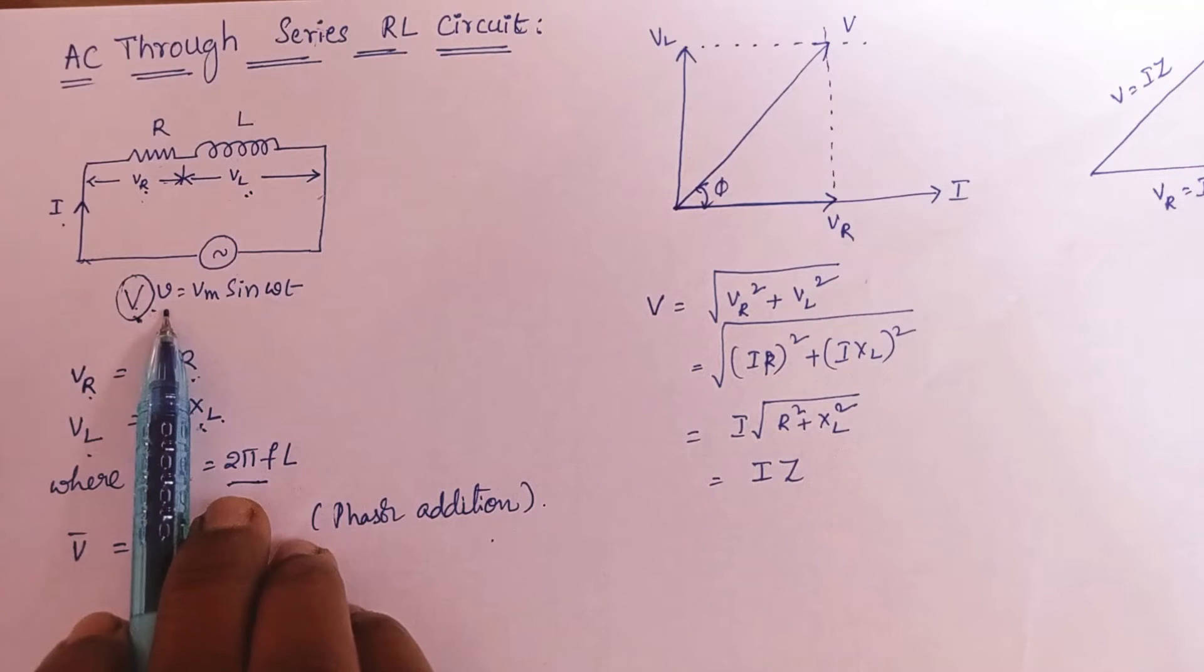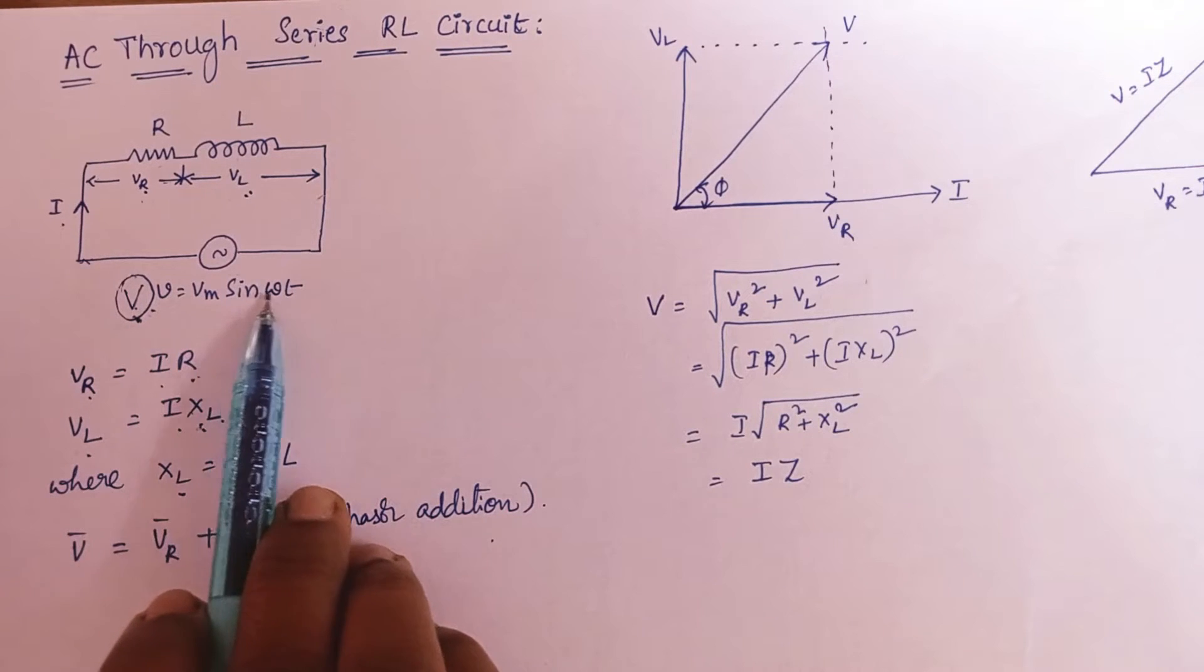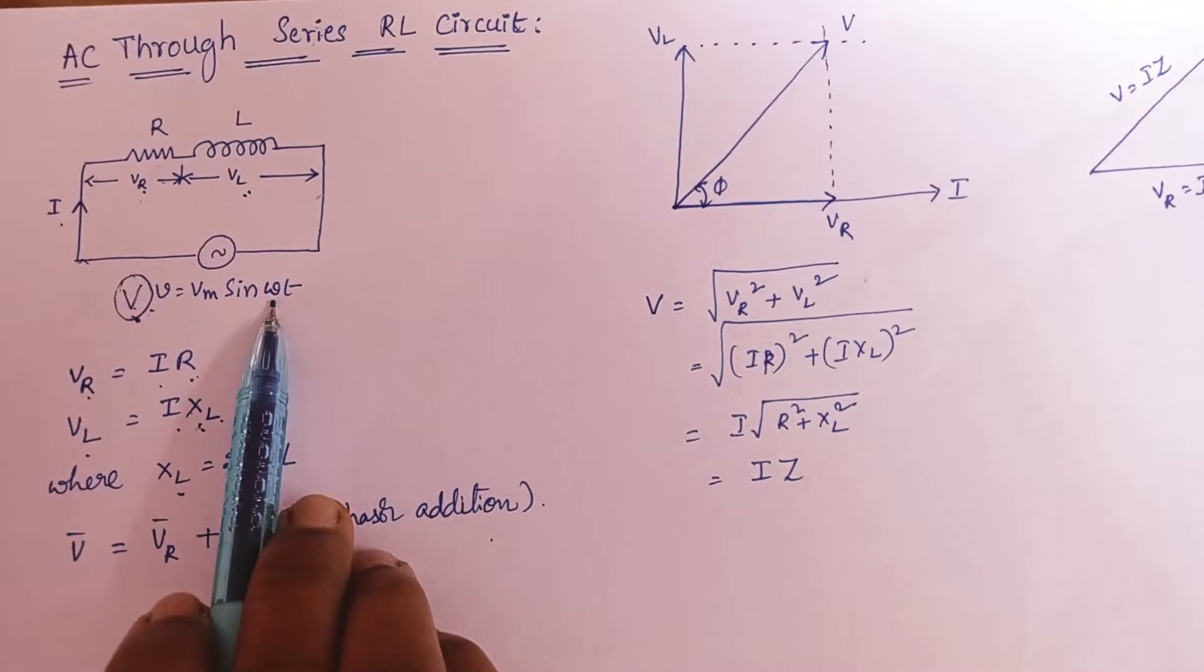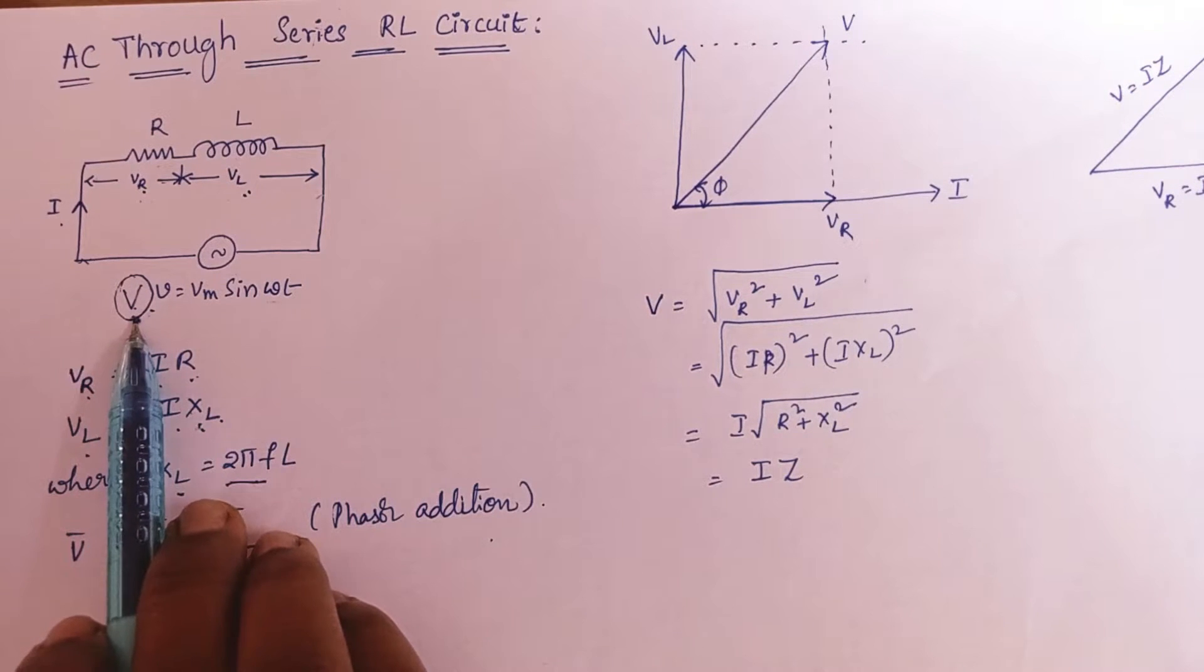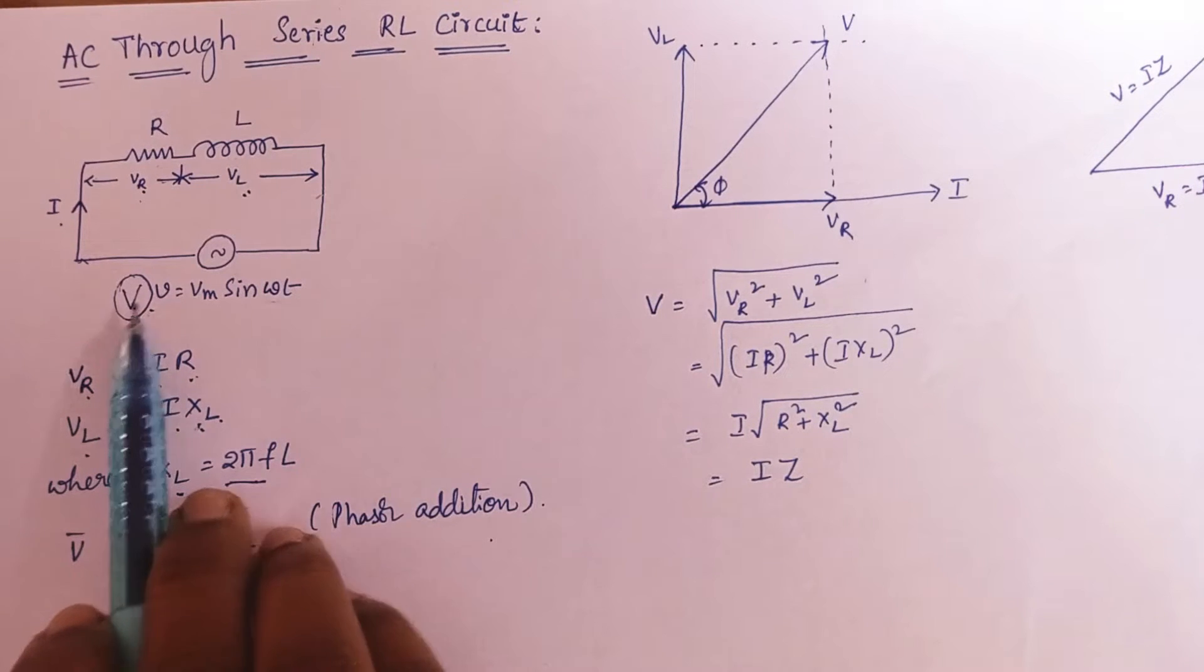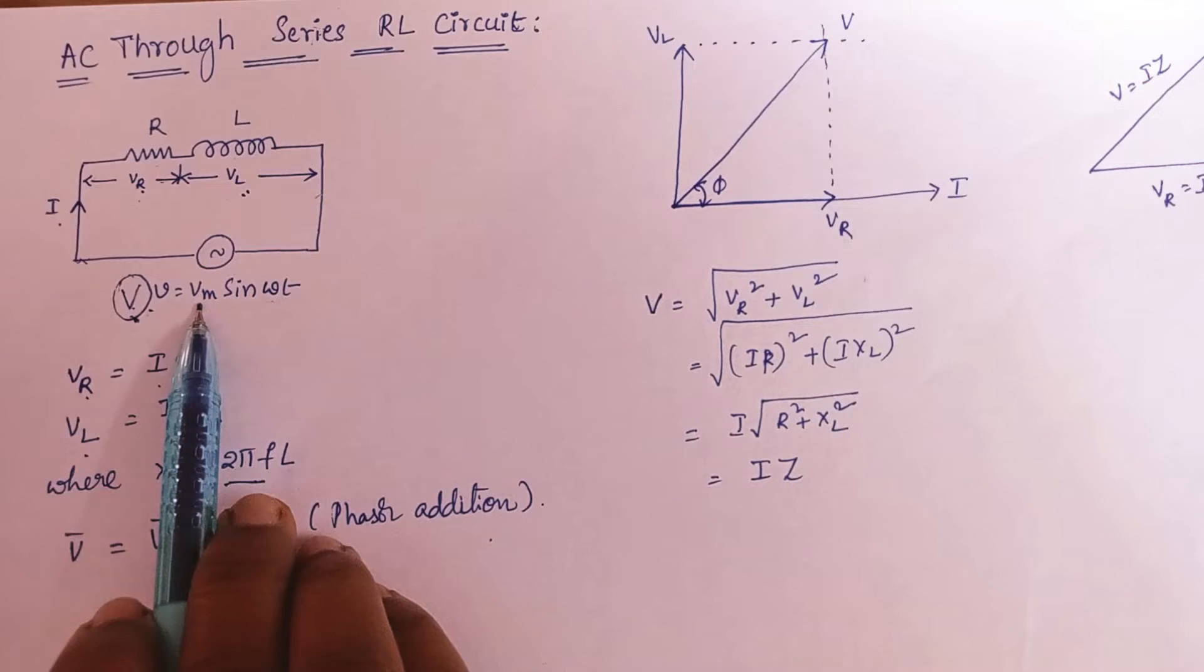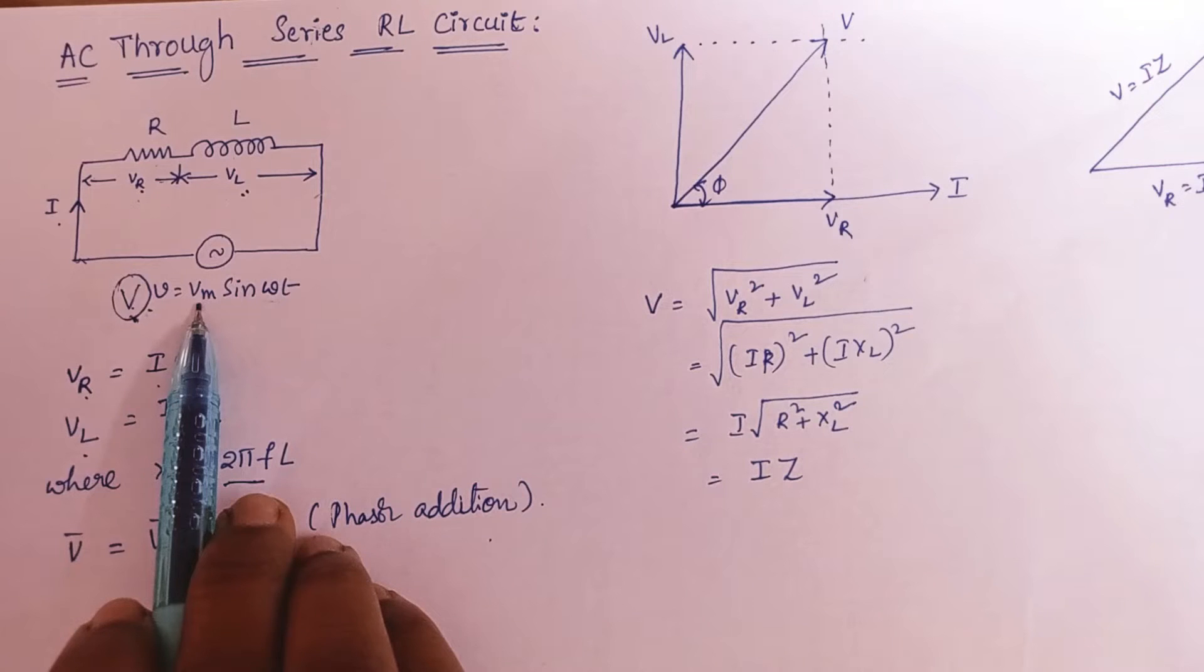That sinusoidal voltage V equal to, this is an instantaneous value, V equal to Vm sin omega t. Omega t can also be treated as theta and this capital V is the RMS value. This RMS value can be evaluated using the formula Vm by root 2. We have discussed RMS value finding in both graphical method and analytical method in our previous videos and if you want that video you can find the same in the description.